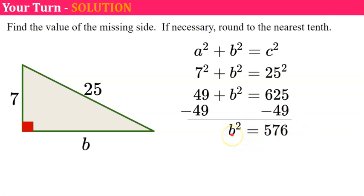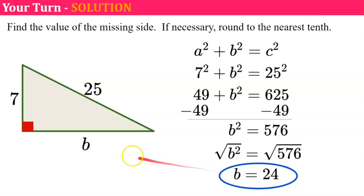Now to solve for the value of b, we're going to take the square root of each side. So b is equal to 24. So my missing side, a leg, is 24, noting that the hypotenuse is the largest side.